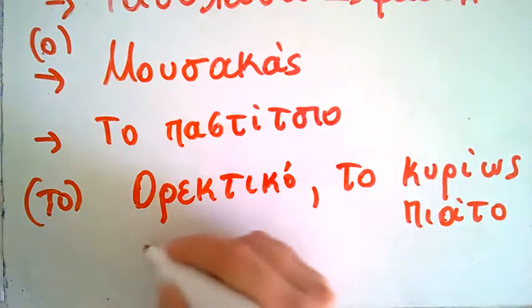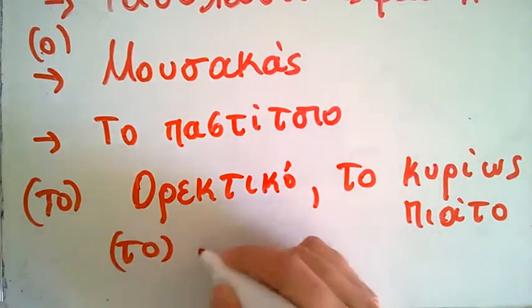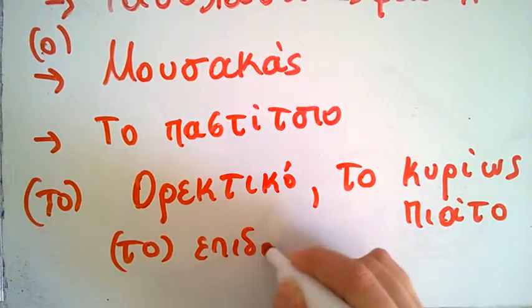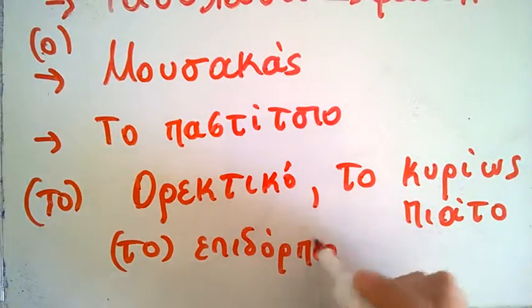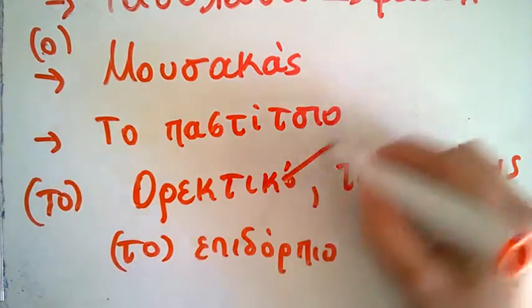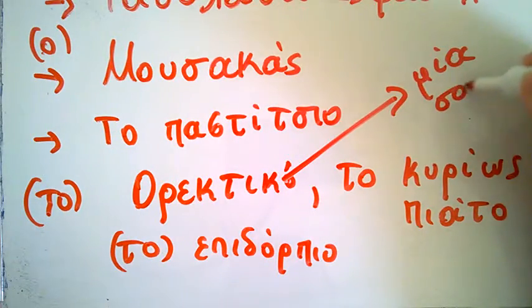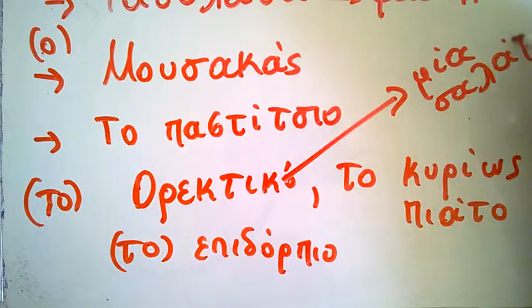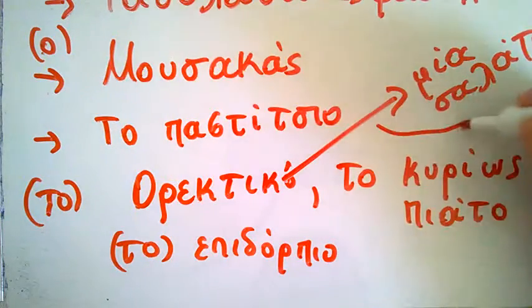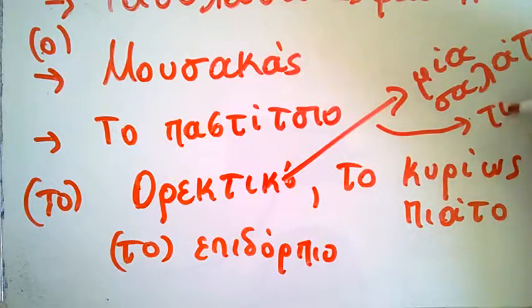The dessert, to epidorpio. So we have to orektikou, which might be a salad, mia salata, a salad, or feta cheese, tiri.